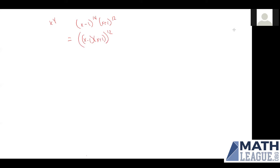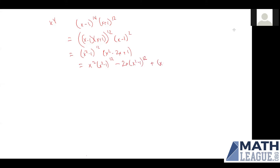Basically, we paired every (x plus 1) to an (x minus 1), and now we have two (x minus 1)s left over. By difference of squares, the inside is just (x squared minus 1) to the power of 12 times (x squared minus 2x plus 1). Expanding this out, this becomes x squared times (x squared minus 1) to the 12th, minus 2x times (x squared minus 1) to the 12th, plus 1 times (x squared minus 1) to the 12th.